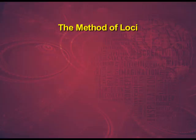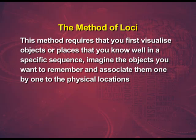The method of loci requires that you first visualize objects or places that you know well in a specific sequence, then imagine the objects you want to remember and associate them one by one to those physical locations. For example, suppose you want to remember bread, eggs, tomatoes, and soap on your way to the market. You may visualize a loaf of bread and eggs placed in your kitchen, tomatoes kept on a table, and soap in the bathroom.